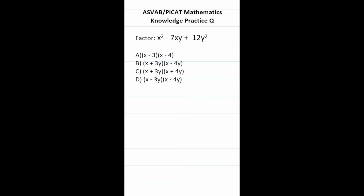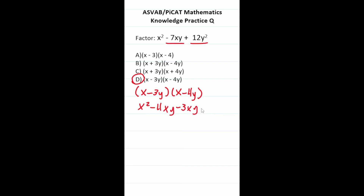This ASVAB PiCat practice question asks us to factor x squared minus 7xy plus 12y squared. This is a quadratic with leading coefficient 1, so we look for two terms that multiply to 12y squared and add to negative 7xy. That's minus 3y and minus 4y. Checking the FOIL: x squared minus 4xy minus 3xy plus 12y squared gives x squared minus 7xy plus 12y squared, so the answer is D.